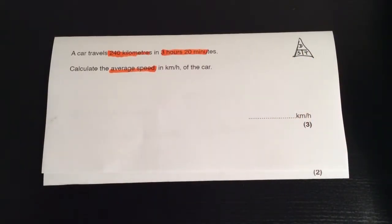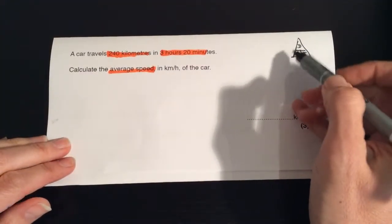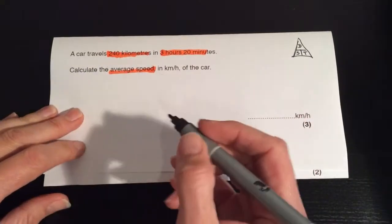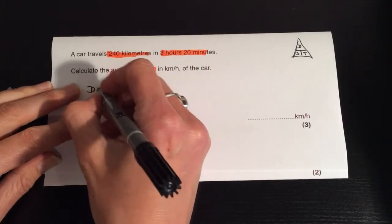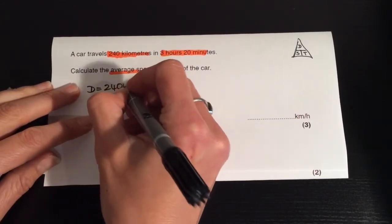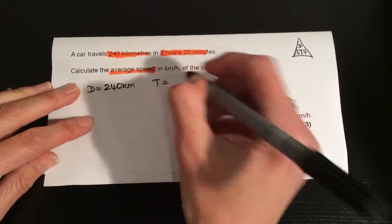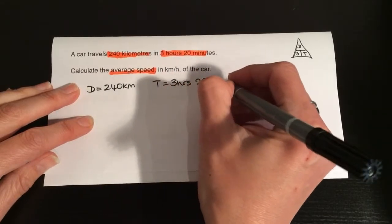Okay, pupils use this regularly in lessons. Distance over time will help you to work out the formulas. Now we have been given that they are traveling 240 kilometers, so that is the distance, and they're traveling for a time of three hours and 20 minutes.